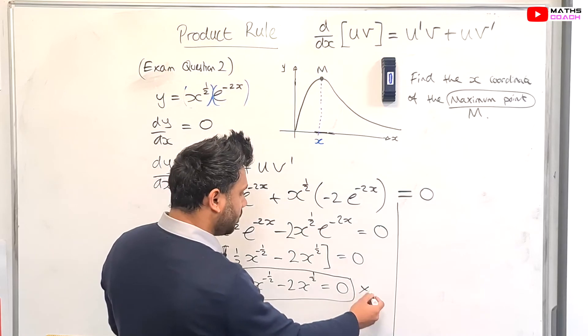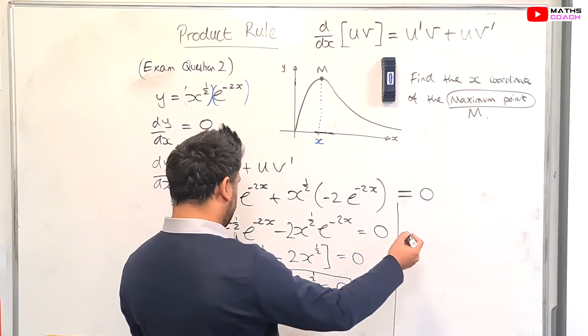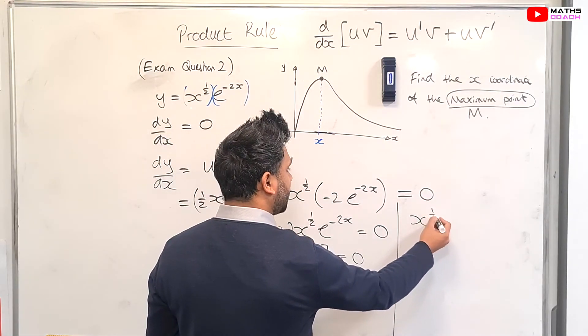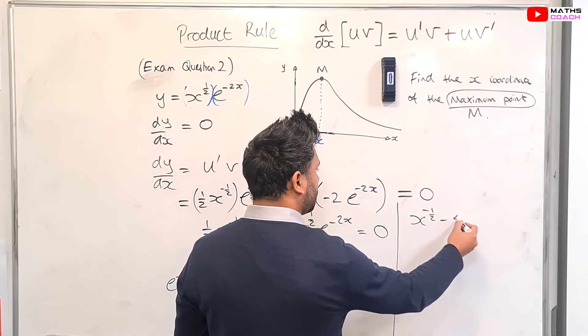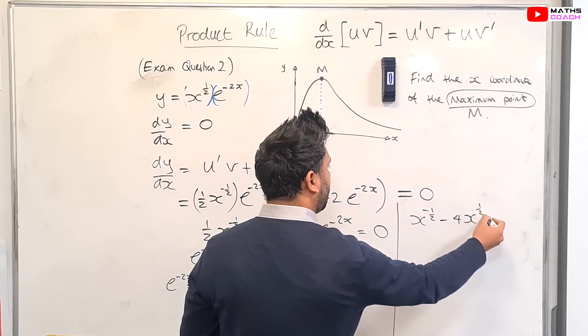so that we get x to the power of minus half minus 4x to the power of a half. And zero times two is still going to be zero.